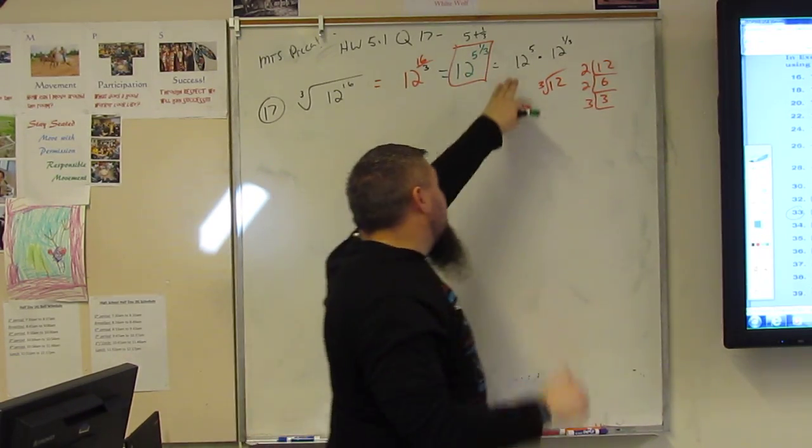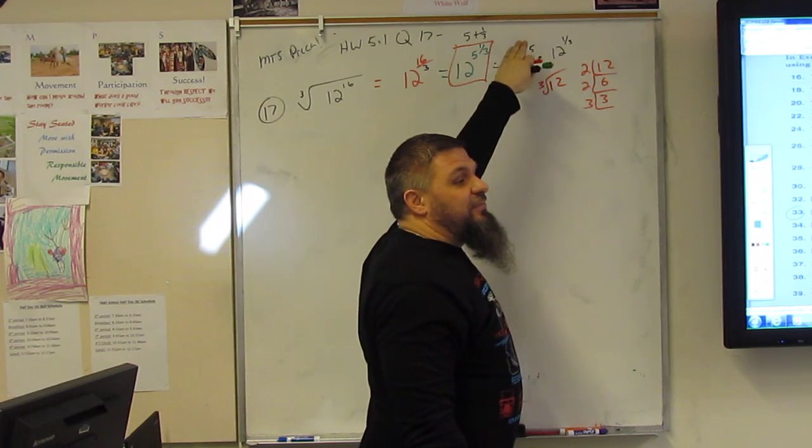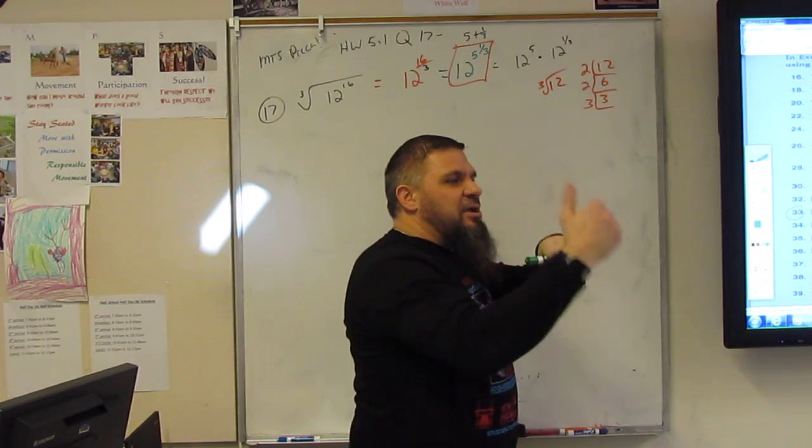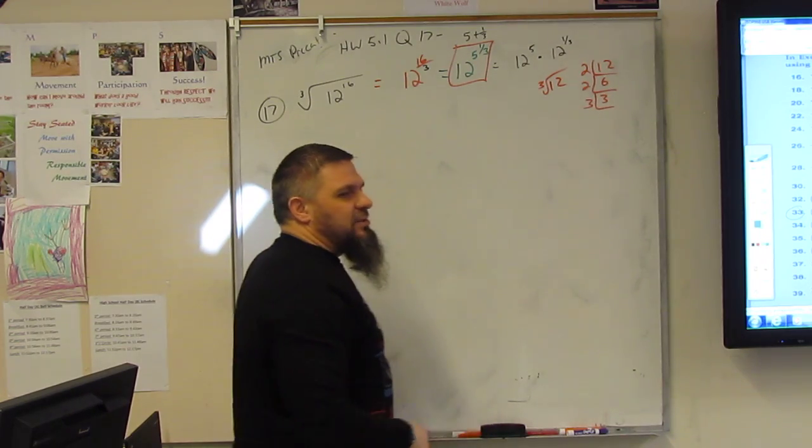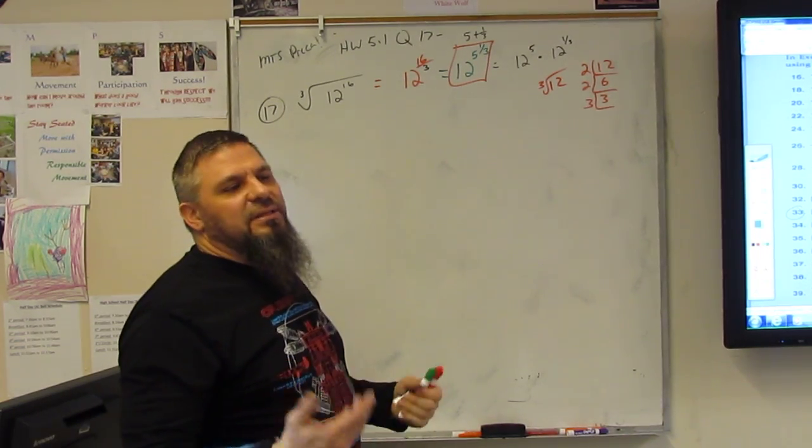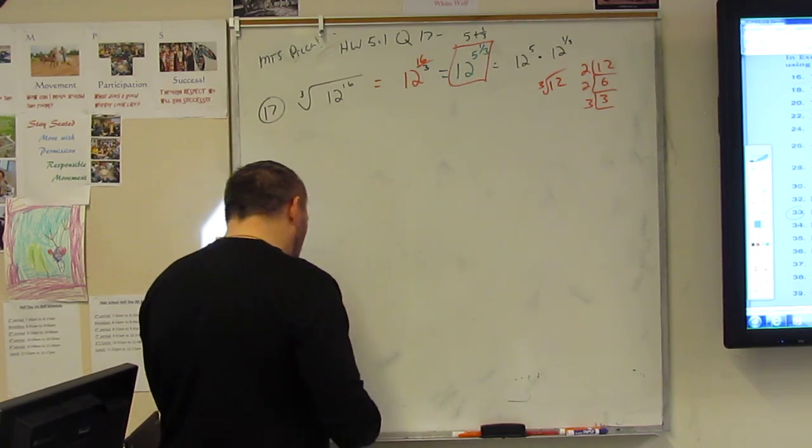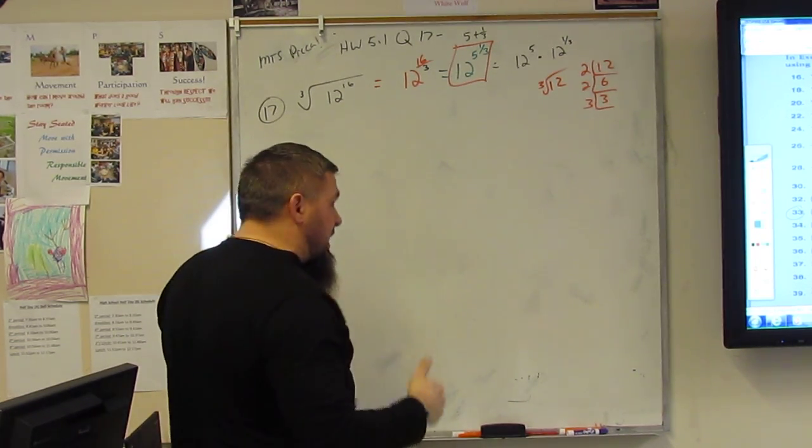But remember, this is without calculator. So we're good with 5 and 1 3rd. The reason why I was going to change it to this was because I could go 12 to the 5th and then I thought I could break that down a little bit like 3 cube roots of 2 or something like that, 2 cube roots of 3. But it didn't work out. We good?